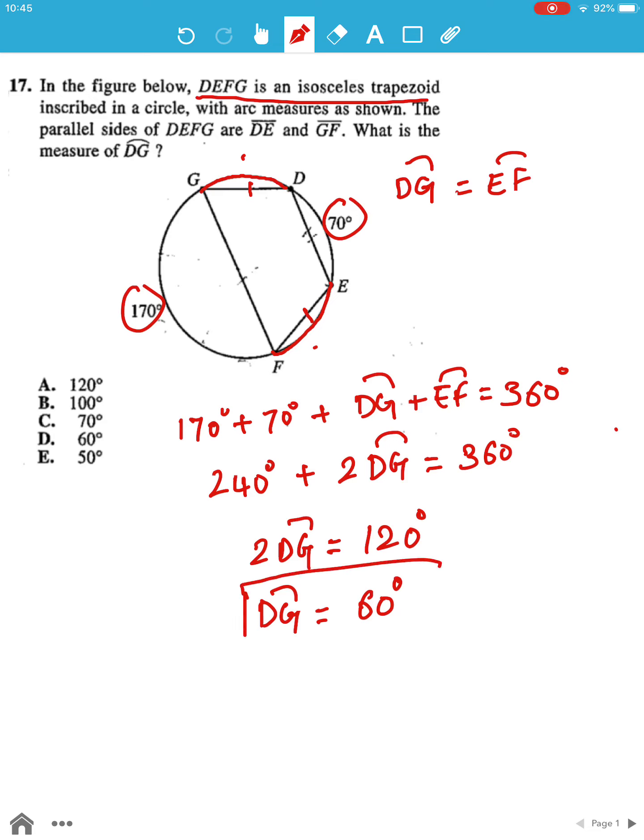And finally, DG is equal to 120 divided by 2, which is nothing but 60 degrees, and this is our final measure, which is given by option D.